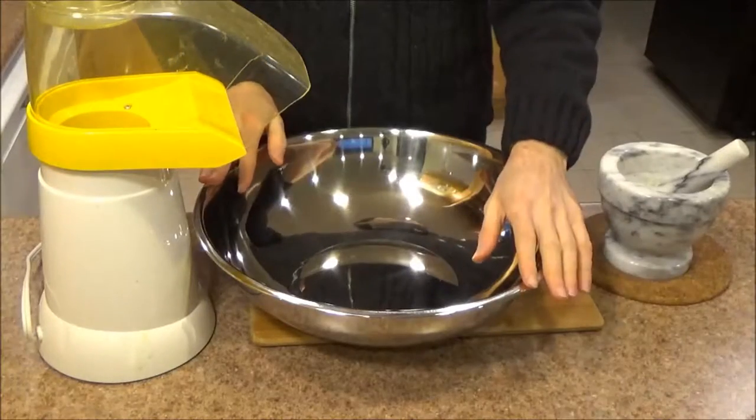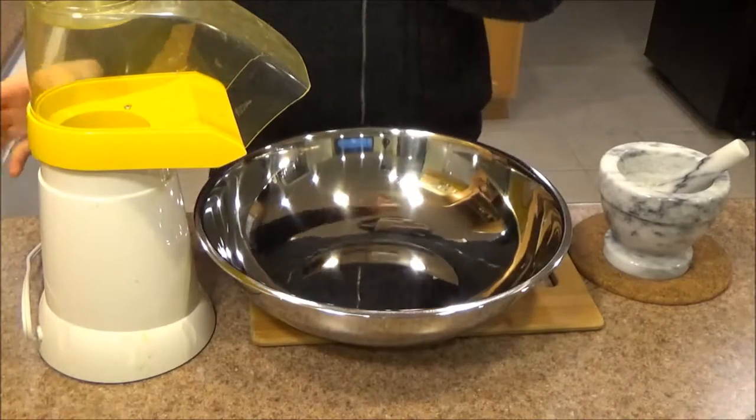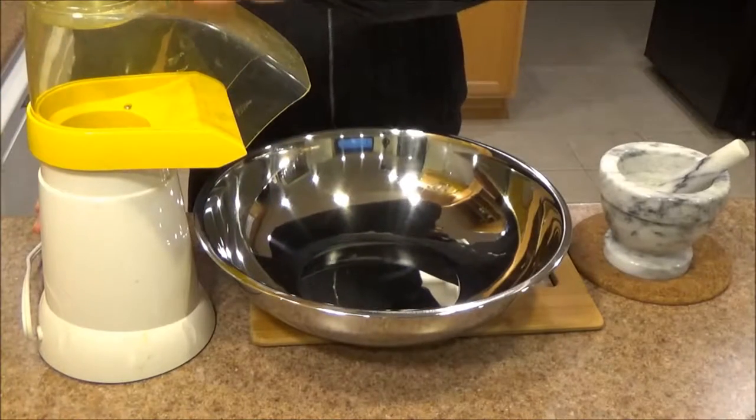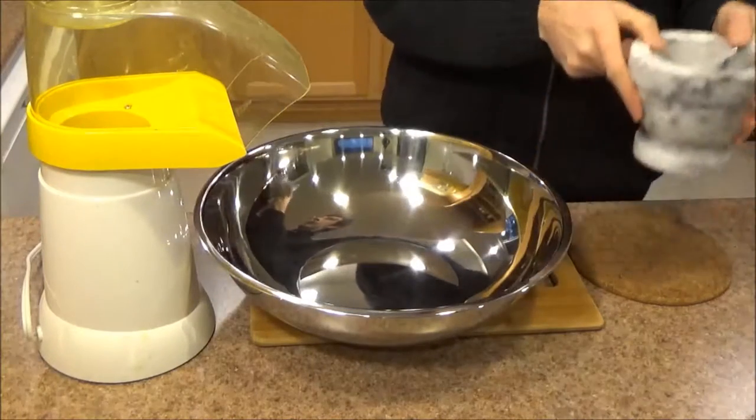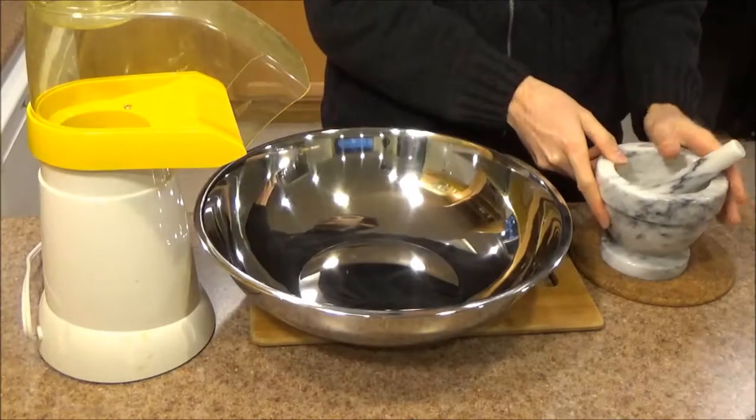And now for our demo. We're going to make some delicious popcorn but there's a couple other things we'll need. So this is an air popper that we're going to use to make our popcorn and over here we have a mortar and pestle. This is the Thunder Group mortar and pestle set which is also available on Tiger Chef.